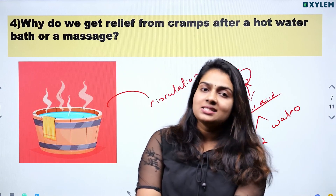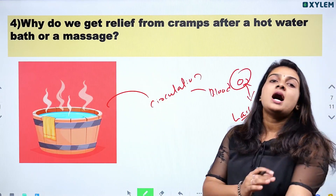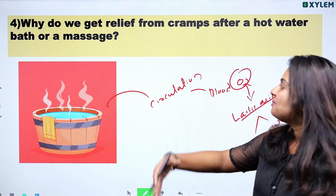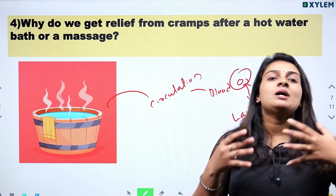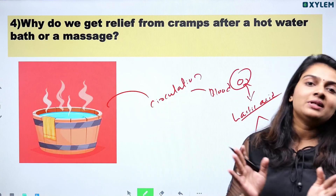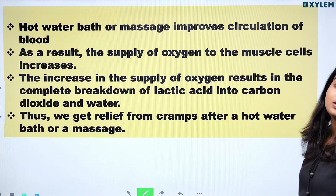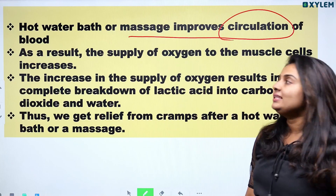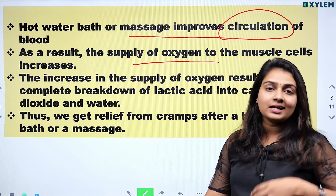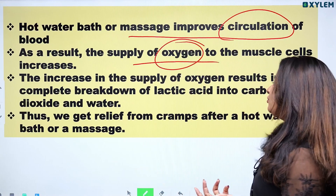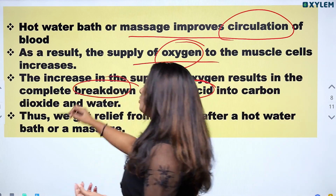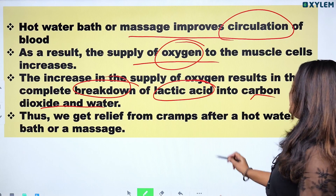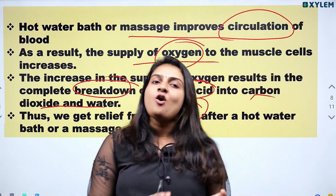We need to massage and increase blood circulation. That's why we do a massage with hot water bath for muscle cramps. This massage improves circulation of blood, which increases oxygen supply to muscle cells. Lactic acid will then break down into carbon dioxide and water. This helps relieve muscle cramps.